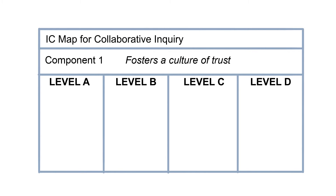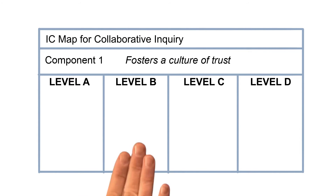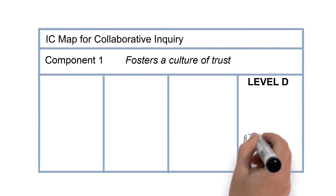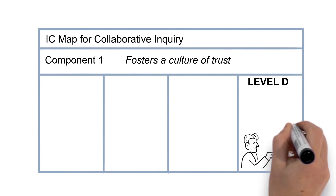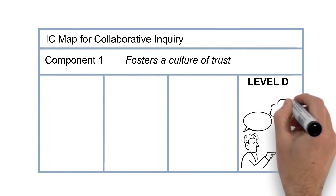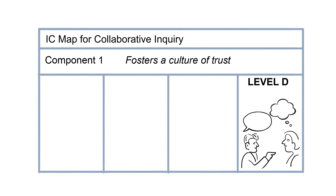Here is what current practice looks like when implementing a culture of trust at the four different levels. At Level D, members of the group contribute to the conversation, but relevant information may not be discussed. Meeting norms have not been established and some members may have negative interactions with other members. This scenario is not the most ideal situation for establishing trust.